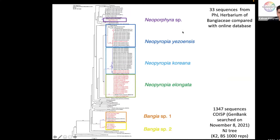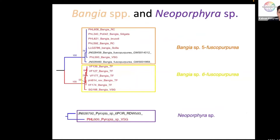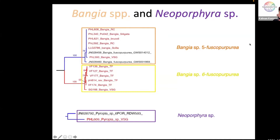Regarding Bangia and Neoporphyra species: for Bangia, we recognized two species — Bangia sp. 5 and Bangia sp. 6 — within Bangia fuscopurpurea, because there are seven species grouped under that name. In Italy we found two species that are traditionally all recognized as just Bangia fuscopurpurea.